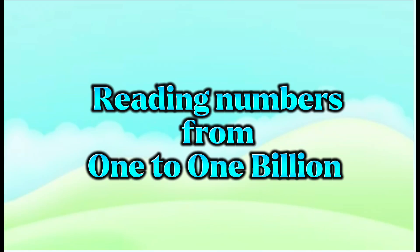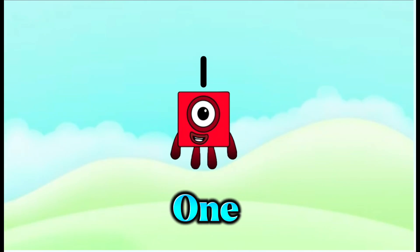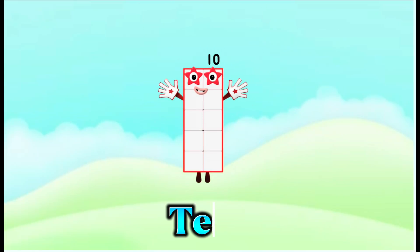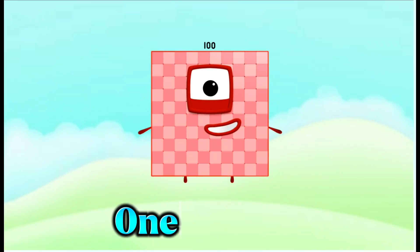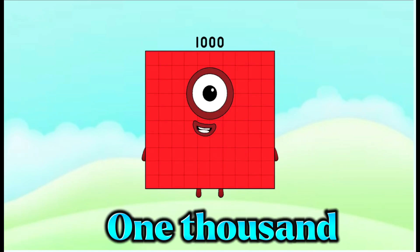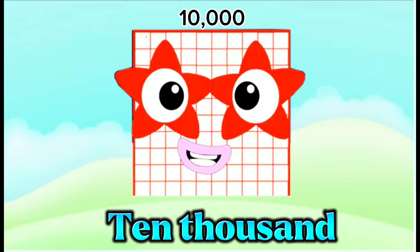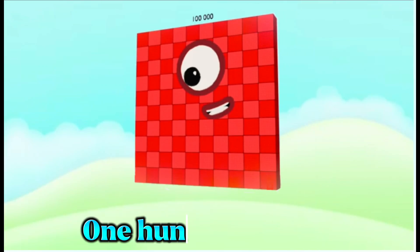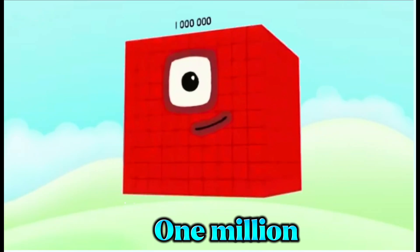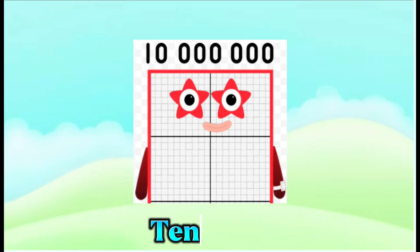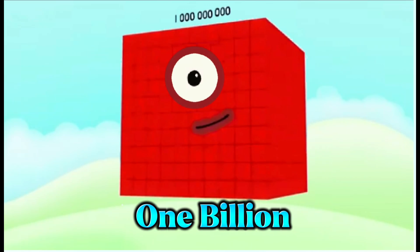Reading numbers from 1 to 1,000,000,000 using number blocks: 1, 10, 100, 1,000, 10,000, 100,000, 1,000,000, 10,000,000, 100,000,000, 1,000,000,000.